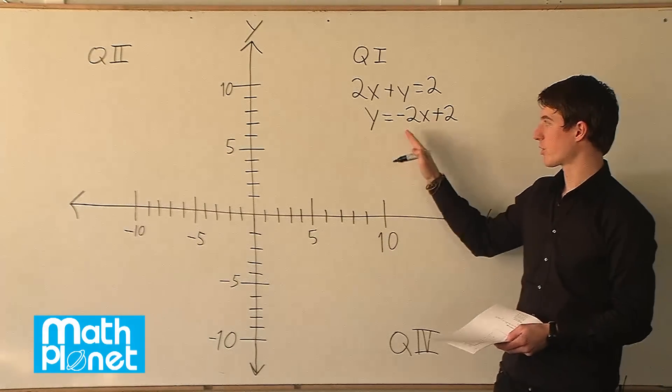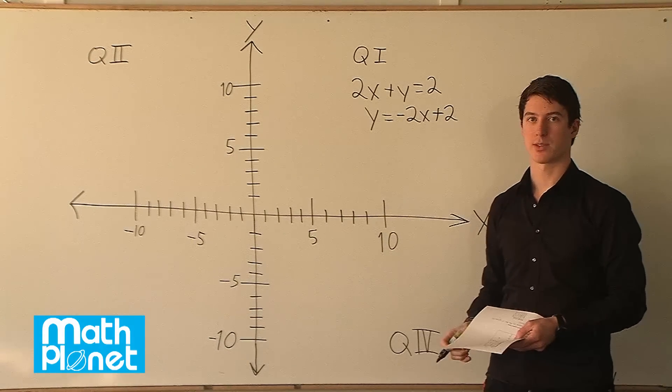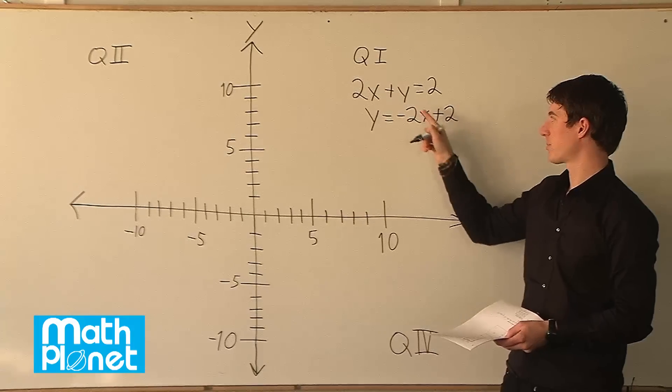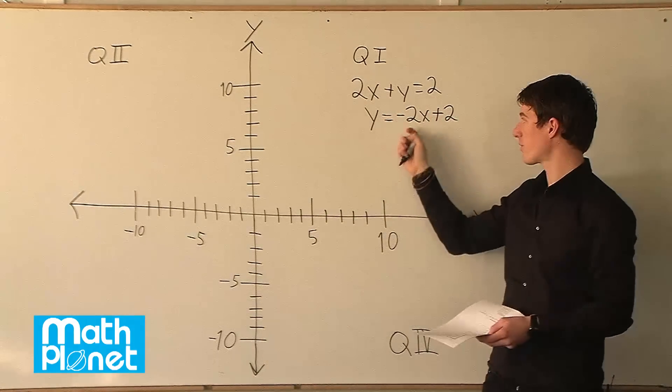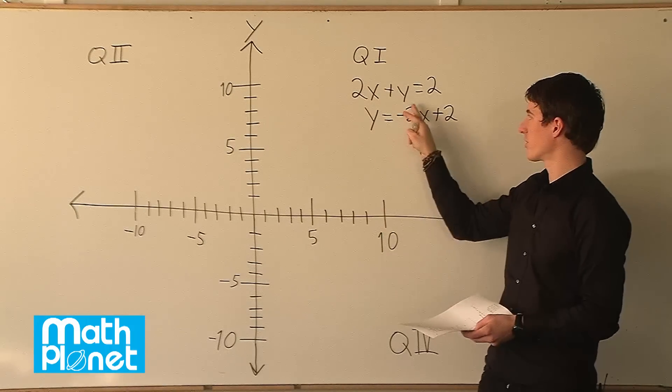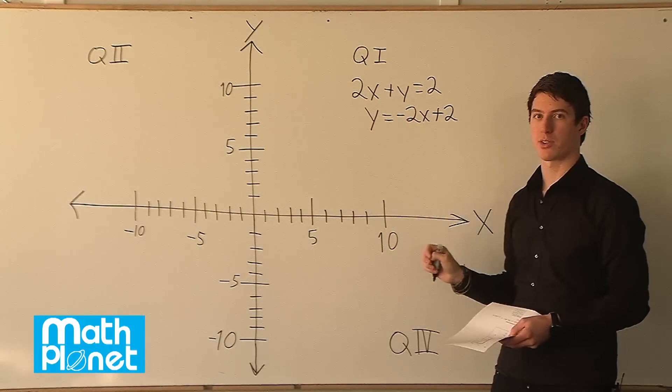Now to graph this we can do it a couple of different ways. We can use the slope intercept form to graph it using these values that we know and what they mean, where this is the slope and this is the y intercept.